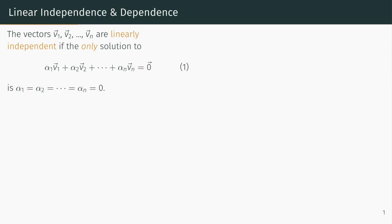In other words, equation 1 only has a solution when all alphas equal 0. This is sometimes called the trivial solution. If v1 through vn are not linearly independent, we say v1 through vn are linearly dependent.